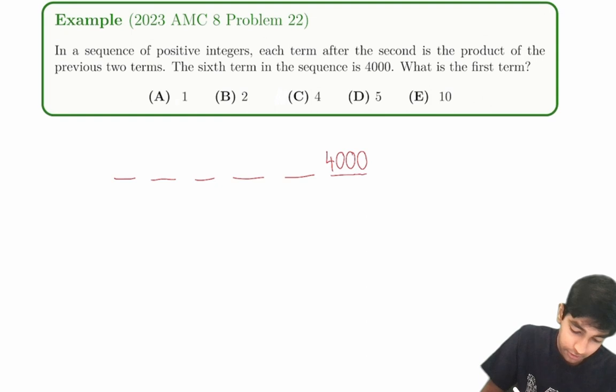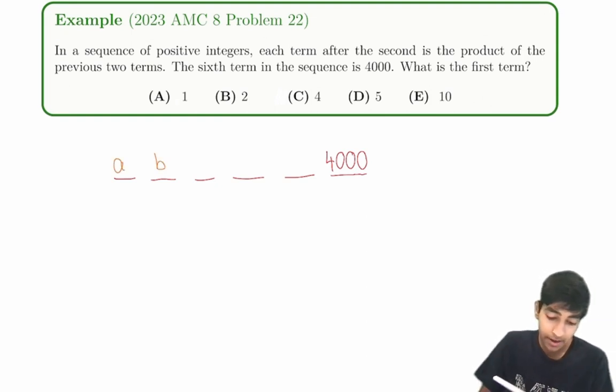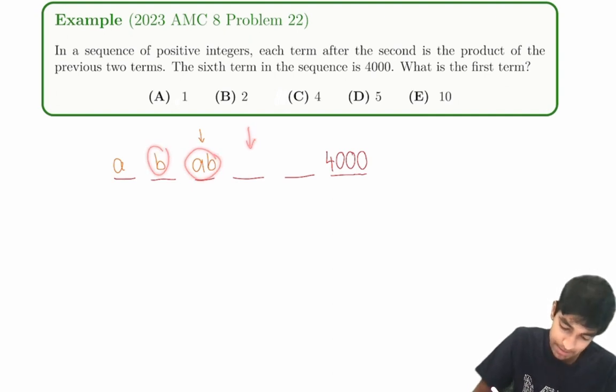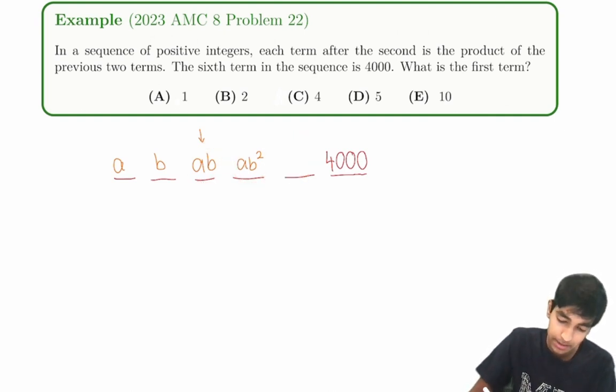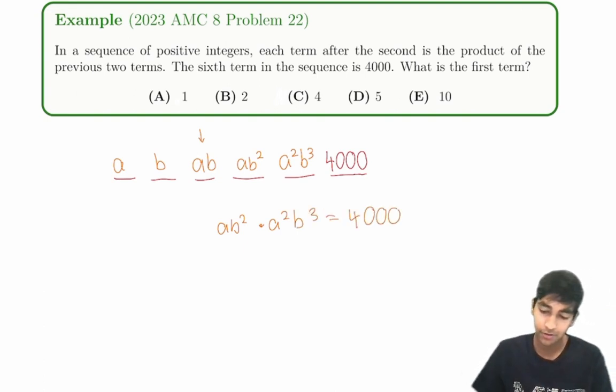So let's say the first term is A, and the second term is B. Then this term will be AB, right, A times B. Then this term will be AB times B, which is AB squared. And then this term will be AB squared, which is A squared B cubed. And then 4,000, we would have that AB squared times A squared B cubed is 4,000. Cool. Because the product of these two terms must be 4,000.